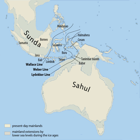Ecoregions of Sundaland include tropical and subtropical moist broadleaf forests: Borneo lowland rain forests, Borneo montane rain forests, Eastern Java-Bali montane rain forests, Eastern Java-Bali rain forests, Mentawai Islands rain forests, Peninsular Malaysian montane rain forests, Peninsular Malaysian peat swamp forests, Peninsular Malaysian rain forests, Southwest Borneo freshwater swamp forests, Sumatran freshwater swamp forests, Sumatran lowland rain forests, and Sumatran montane rain forests.